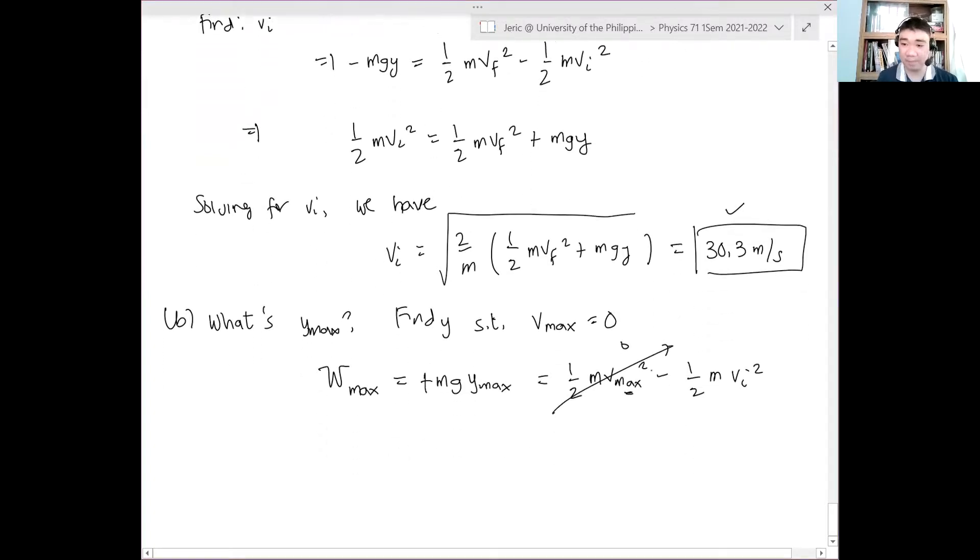And hence, this is negative. It will be both positive. And say that, implying that y max is just equal, the masses will cancel. Therefore, it's independent of the mass of the object. It's just equal to vi squared over 2g. But alam natin ang initial velocity niya ay 30.3 meters per second. So this is 30.3 meters per second quantity squared over twice ni 9.81 meters per second.